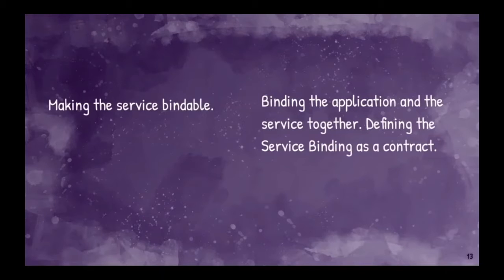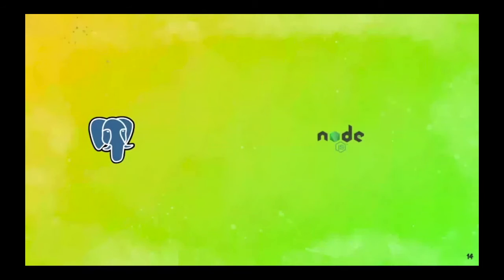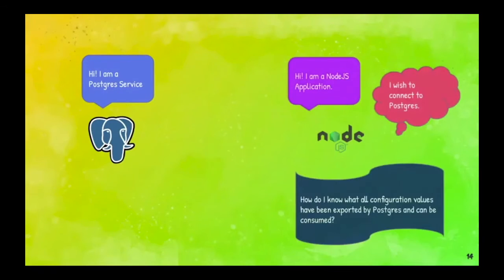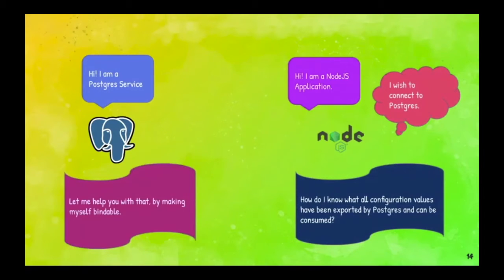Suppose we have a Postgres and a Node.js app. This pictorial illustration shows what we're trying to achieve with the operator. The Postgres service is a backing service, and the Node.js application asks: how do I know what configuration values Postgres has exported for me to consume? Postgres answers by making itself bindable. You then create a Service Binding Request (SBR), and you're good to go.